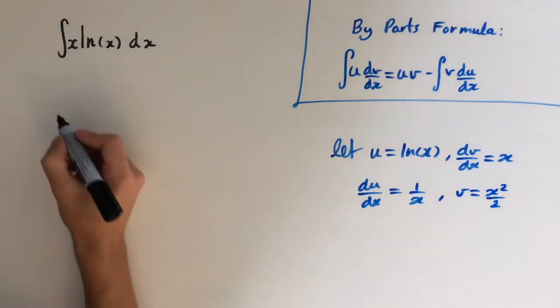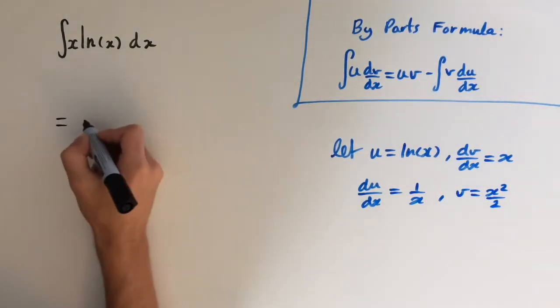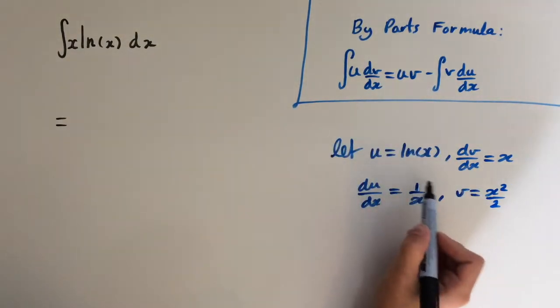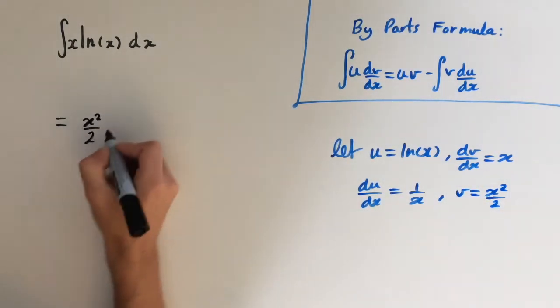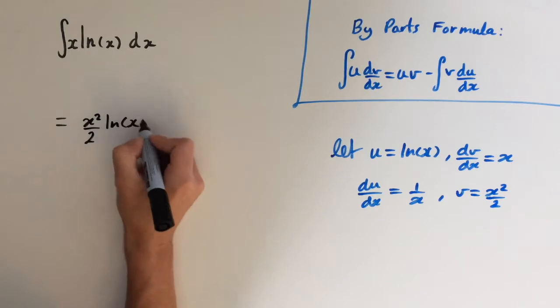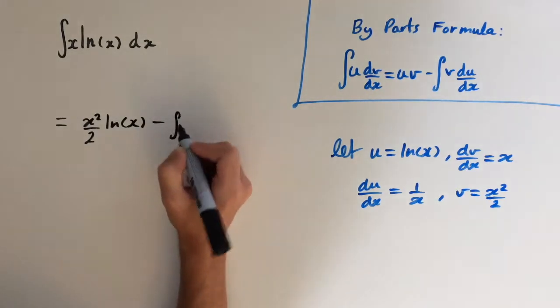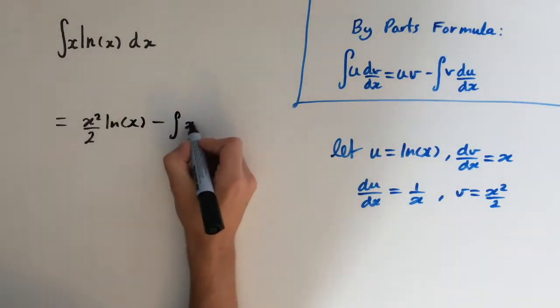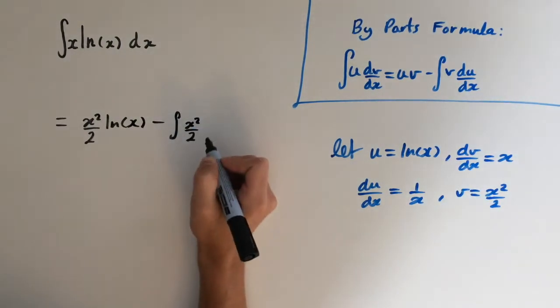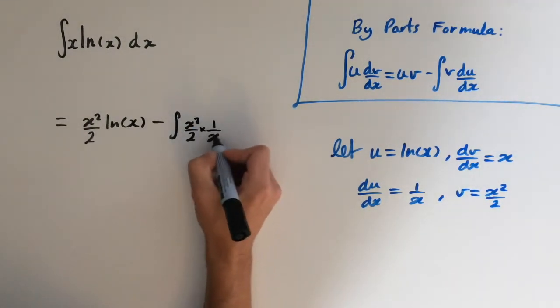So this means that this integral here, x ln of x, is going to equal uv, so x squared over 2 times ln of x, minus the integral of v du/dx, which is x squared over 2 times 1 over x dx.